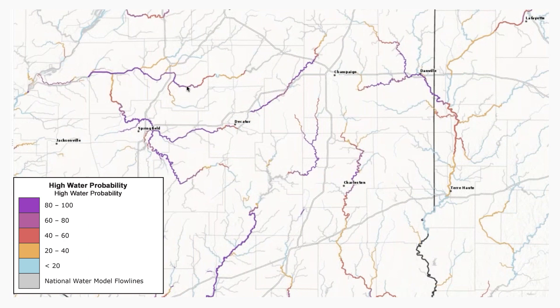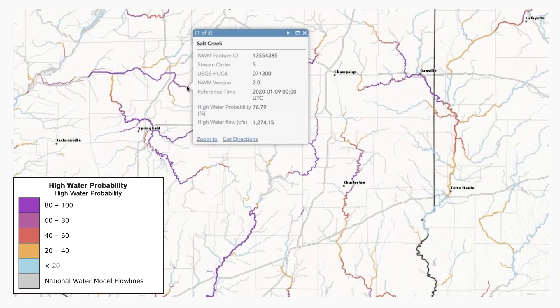Clicking a location reveals additional details about its expected conditions, including the estimated high water flow threshold for that reach and the probability of exceeding that threshold.